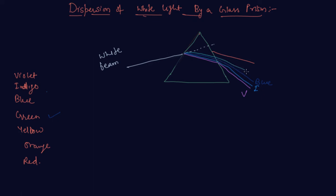So this is green. Now next is yellow. So this is yellow. Then it is orange. Now students, it is orange and last but not least is red.